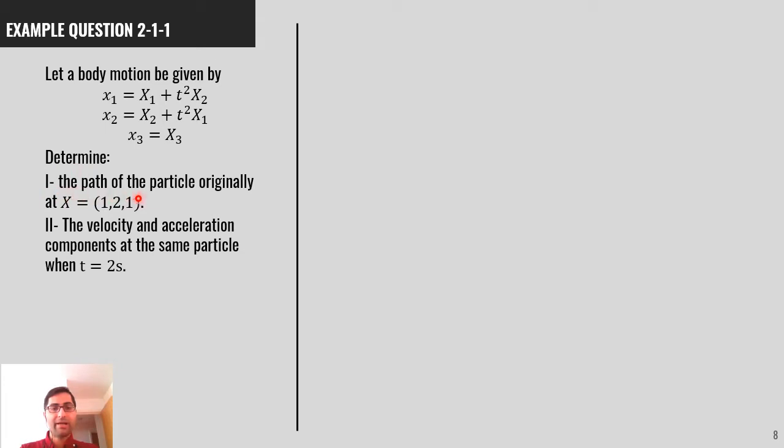It says, determine the path of the particle originally at capital X, initial position, 1, 2, 1, and the velocity and acceleration of the same particle at t equal to 2 seconds.